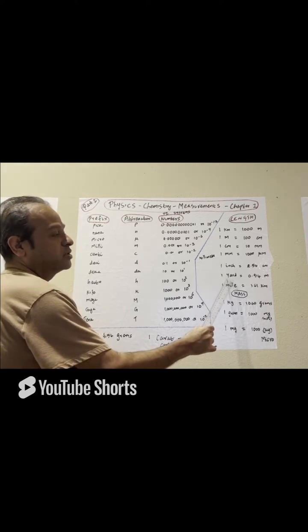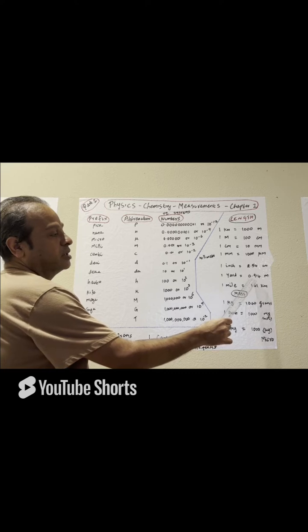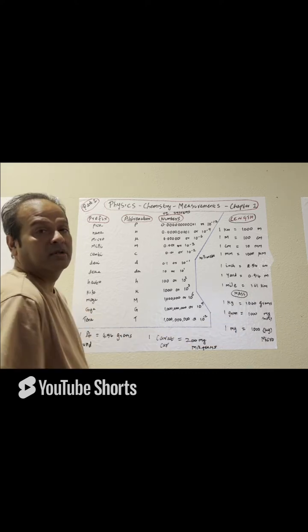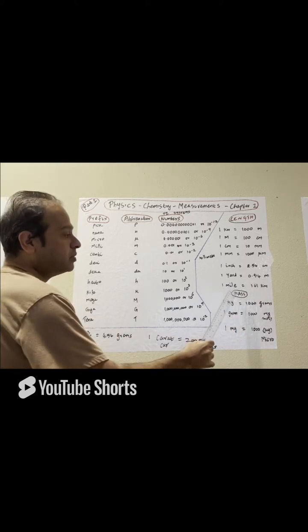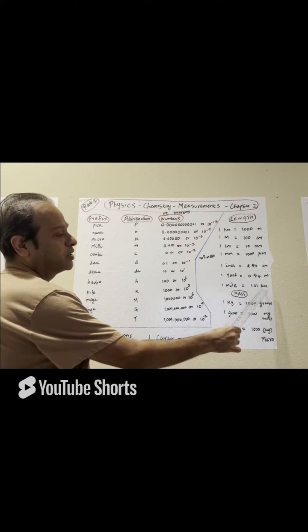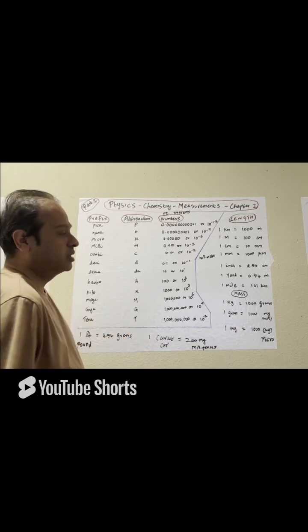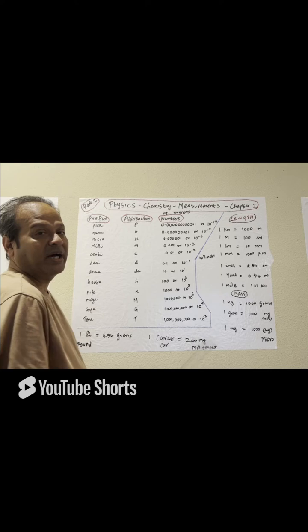If you have 10 yards, you have to multiply by 0.914 meters. One mile equals 1.61 kilometers. Likewise, these are related to the mass.